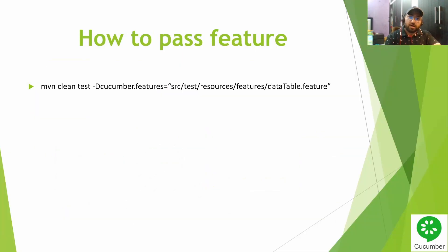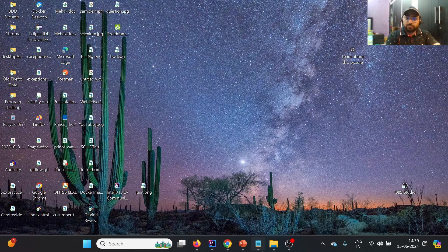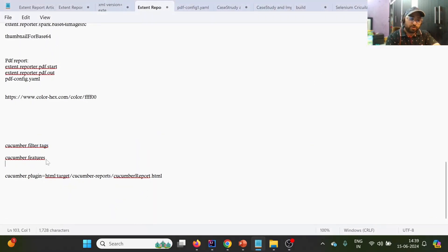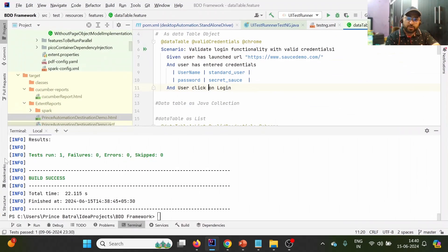Another option is to pass the feature file location on the fly. Using '-D cucumber.filter.tags', we can also use '-D cucumber.features' to point to a particular feature file.